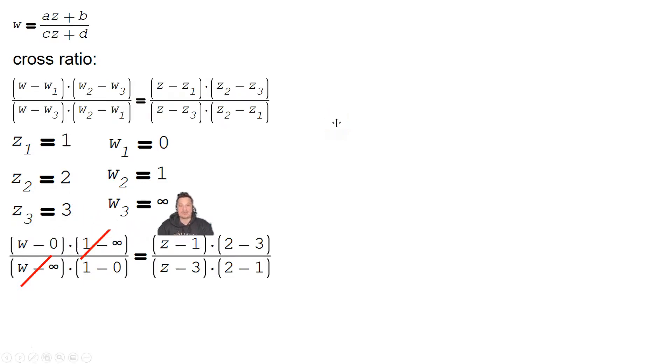On this side, you're going to have Z minus 1. That stays. Then you'll have 2 minus 3, which is negative 1. On the bottom, you'll have Z minus 3. And then 2 minus 1. Well, 2 minus 1 is just 1.